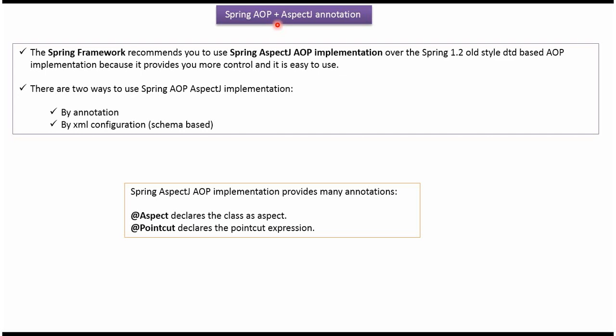In this video tutorial I will explain Spring AOP plus AspectJ annotation. Spring framework recommends you to use Spring AspectJ AOP implementation over Spring 1.2 old style DTD based AOP implementation, because Spring AspectJ AOP implementation provides more control and it is easy to use. There are two ways we can use Spring AOP AspectJ implementation: the first way is by annotation and the second way is by XML configuration.